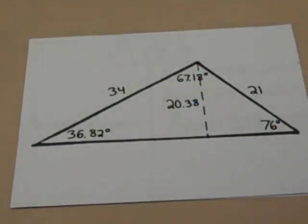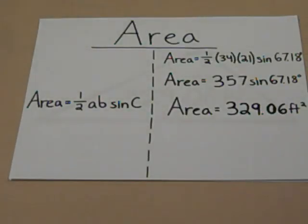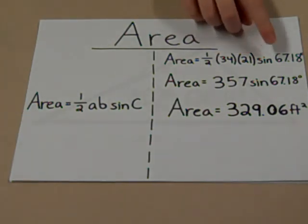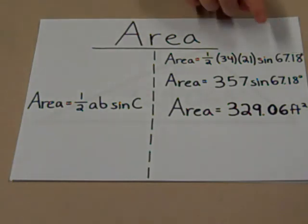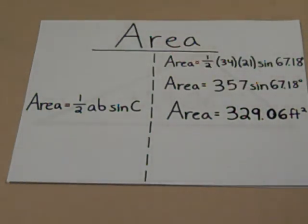Plugging this into the formula along with the other variables, we get area equals one half times 34 times 21 times sine of 67.18 degrees. Therefore, area equals 329.06 feet squared.